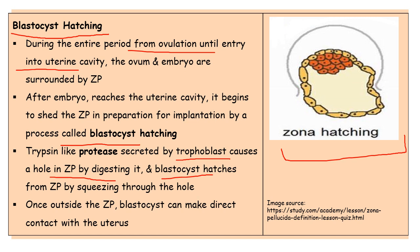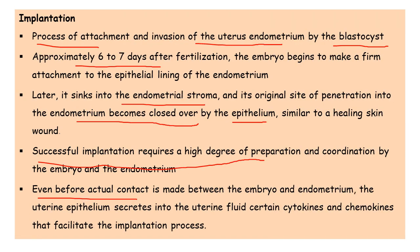The expanded blastocyst is now ready for implantation in the uterus. The uterine milk released by the uterus contains certain chemical attractants like chemokines and cytokines which attract the blastocyst toward the implantation site. Implantation is the process of attachment and invasion of the uterine endometrium by the developing blastocyst, starting approximately six to seven days after fertilization, when the embryo begins to make firm attachment to the epithelial lining of the endometrium.